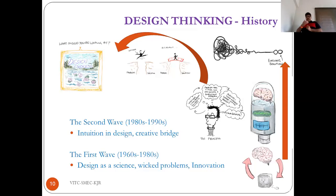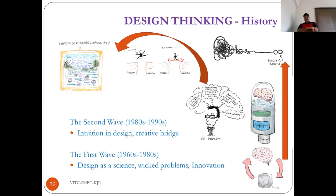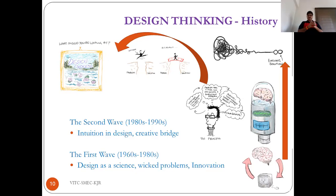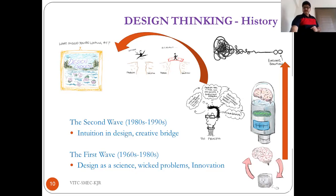The history and evolution happened in waves. The first wave, from 1960s to 1980s, considered design as a science applicable to wicked problems and seen as part of innovation — comparing the brain against the computer and considering brain intelligence as the path to finding solutions. The second wave introduced intuition in design, a creative bridge, transitioning design into a process — a pathway to bridge the gap between problem and solution, guiding designers to follow a system architecture.